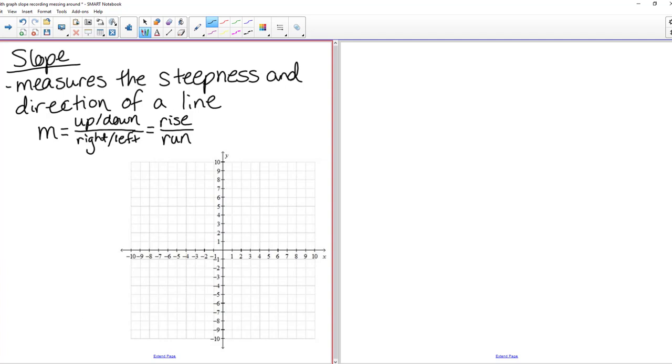Notice we use the m as our variable for slope. I like to think of this as because it's like a mountain, the slope of a mountain.